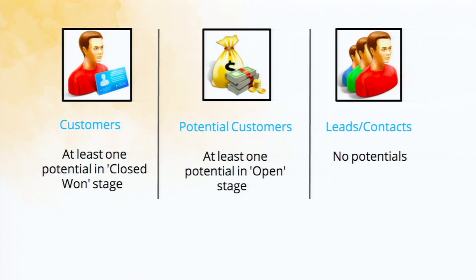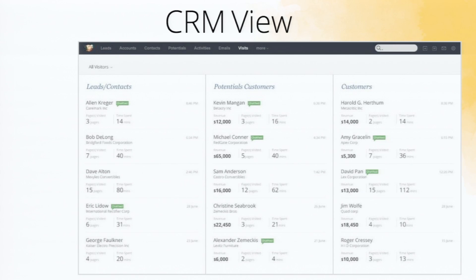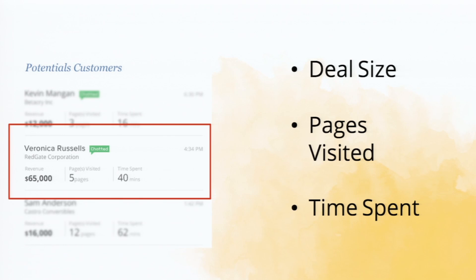I'm going to walk you through a series of screenshots to give you an idea about what Zoho SalesIQ is and how it will help you. The first one is the CRM view for all visits. When you log into Zoho CRM after setting up the integration, there is a module called Visits inside Zoho CRM. The system will automatically categorize all visit information as a lead, contact, potential customer, or customer. If you look closely, you'll find names and some numbers — the account, the total value of potentials associated with that person, pages they visited, and total time spent during visits.